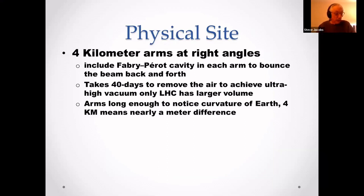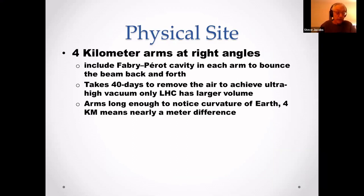The arms are four kilometers at right angles, with a very narrow cavity in each arm. The beam bounces back and forth approximately 280 times, effectively lengthening the arms to 1,200 kilometers. It takes 40 days to remove all the air to achieve the ultra-high vacuum.